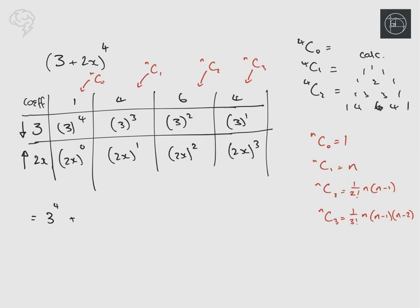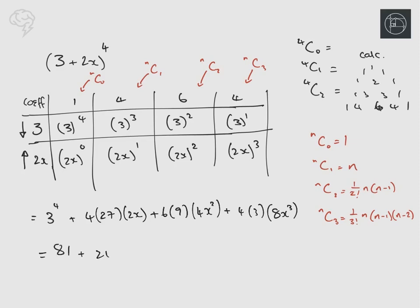The next term is four times three cubed times 2x. The next term is six times nine times (2x)^2 — don't forget, (2x)^2 is four x squared, not two x squared. Then four times three times (2x)^3, which is eight x cubed. Getting the calculator out: that gives us 81 + 216x + 216x² + 96x³.